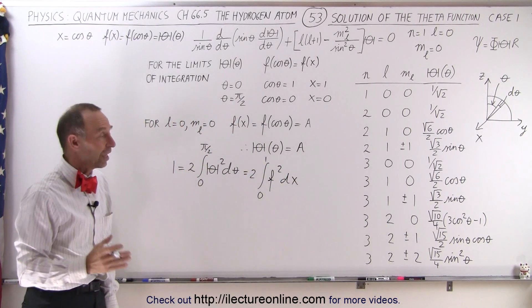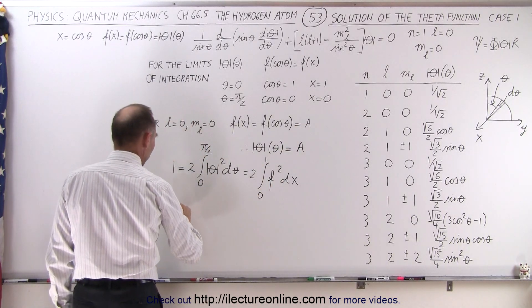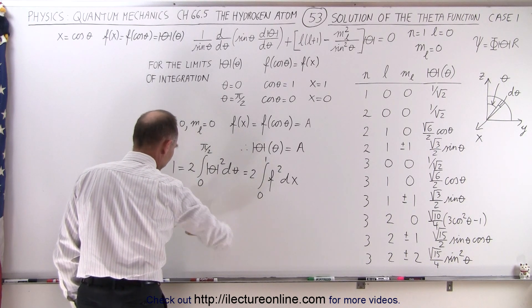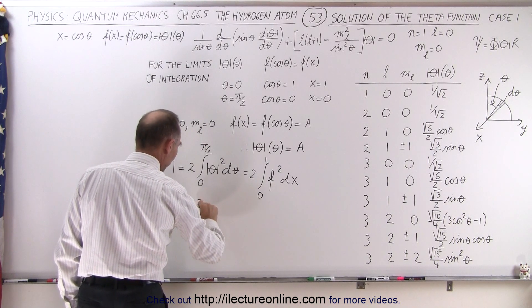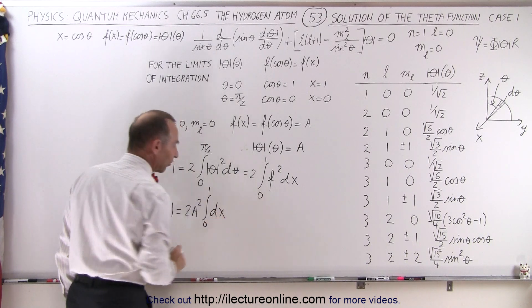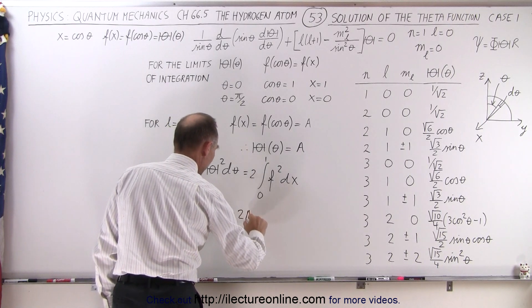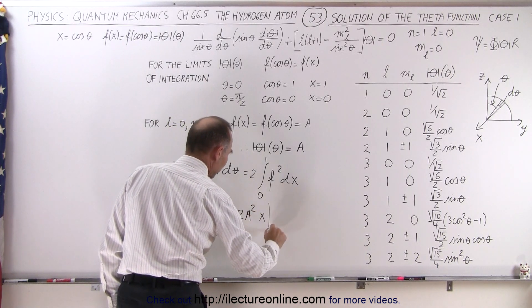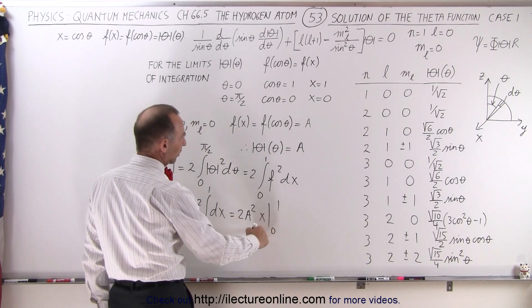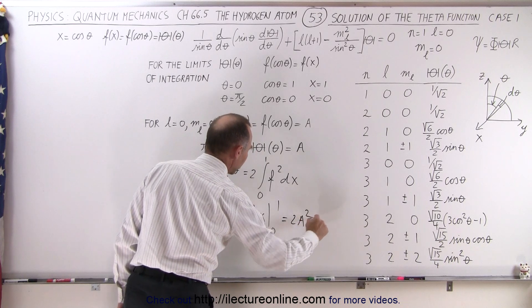In this case, the f function is going to be a — just a constant — so we know that 1 is equal to 2 times a squared times the integral from 0 to 1 of dx. That's a very easy integral to do, so this is equal to 2a squared times x evaluated from 0 to 1. When you plug in the lower limit you get 0, plug in the upper limit you get 1, so this is equal to 2a squared.